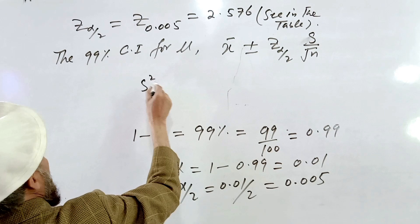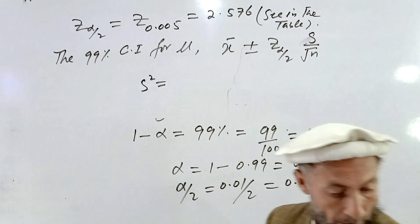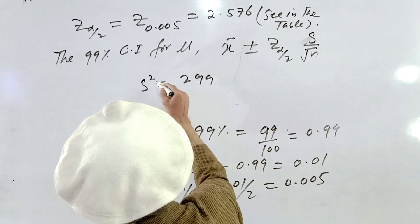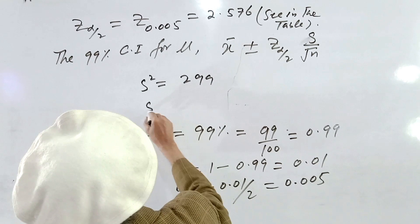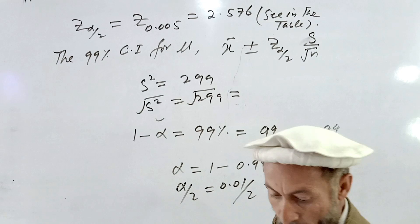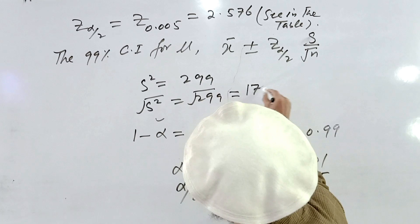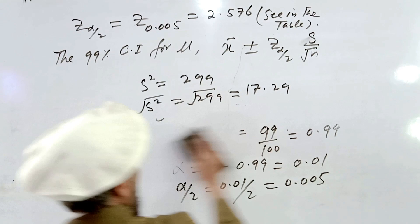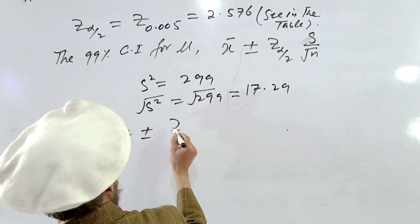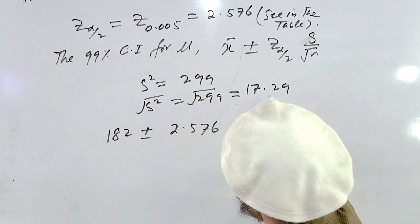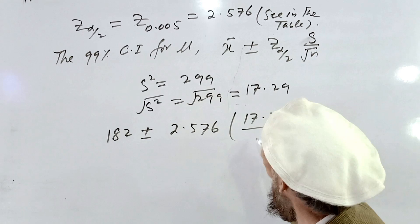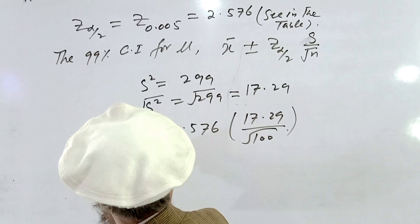In the question, S-squared is given as 299. We need S, so we take the square root of both sides. Using a calculator, the square root of 299 is approximately 17.29. We substitute into the confidence interval formula: 182 plus or minus 2.576 times 17.29 divided by the square root of 100.